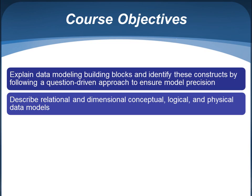The second objective is to describe relational and dimensional — conceptual, logical, and physical data models. I'm going to go through the six different types of data models that exist: relational and dimensional, and for each of these two modeling mindsets, the three different levels of modeling — conceptual, logical, and physical. Conceptual is all about understanding the big picture, logical is solving the business solution, and physical is solving the technical solution.